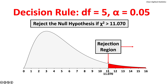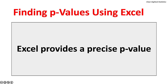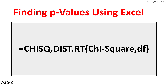As with the t-distribution, we can use the Chi-square critical values table to obtain an estimate of the p-value. However, Excel provides a precise calculation of the p-value using the CHISQ.DIST.RT function, which takes two arguments: the calculated value of the test statistic and the degrees of freedom.